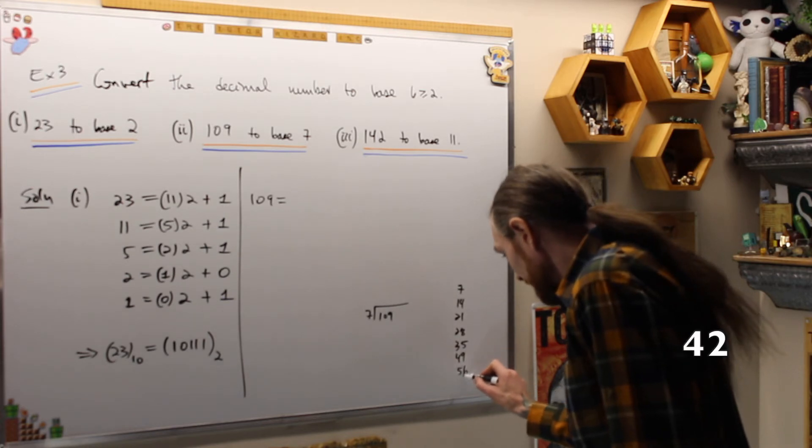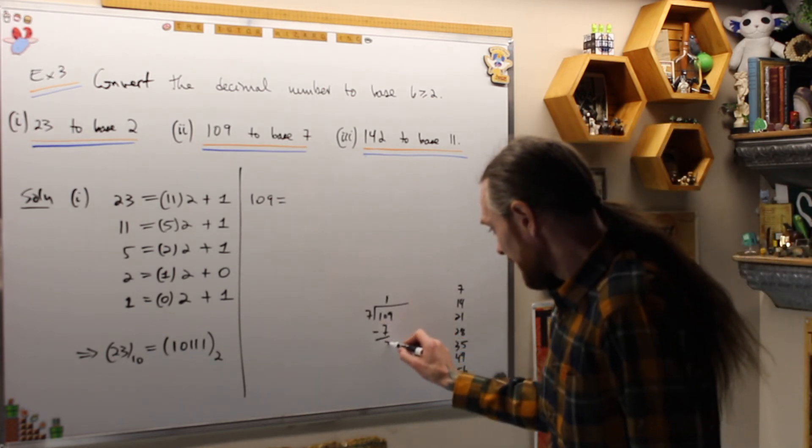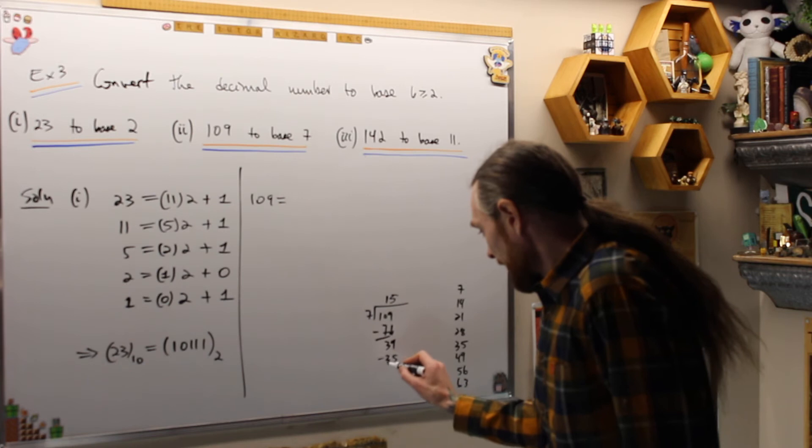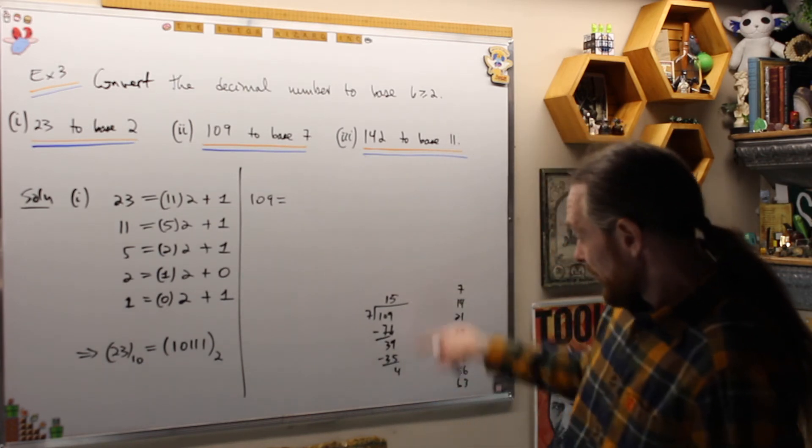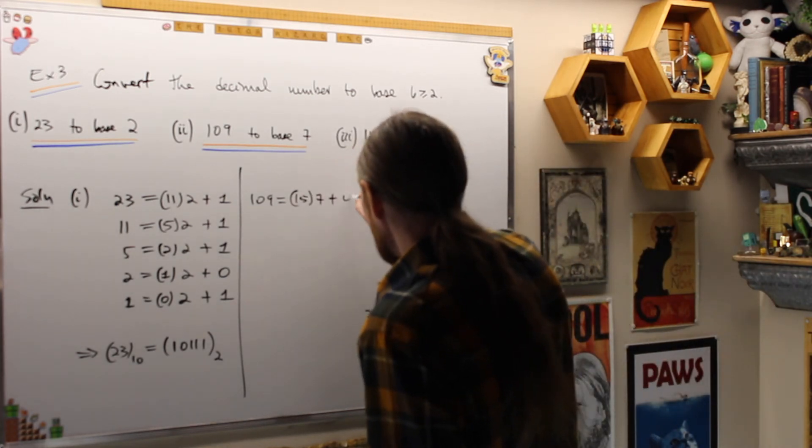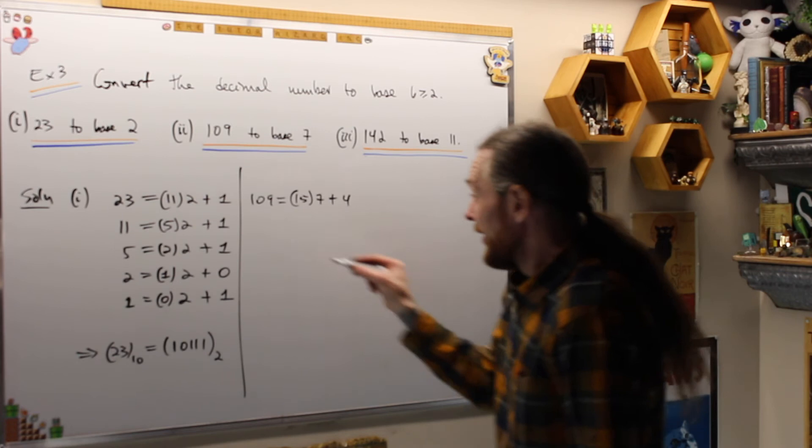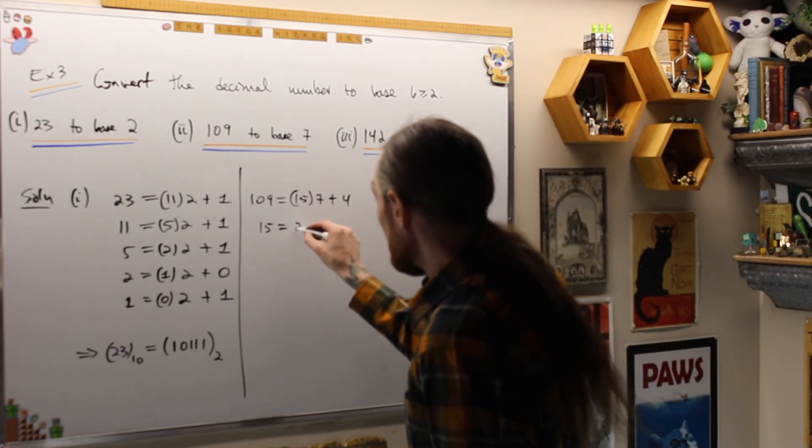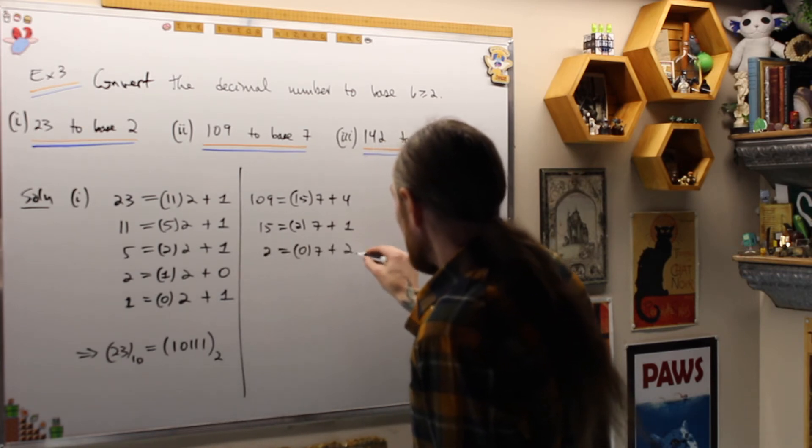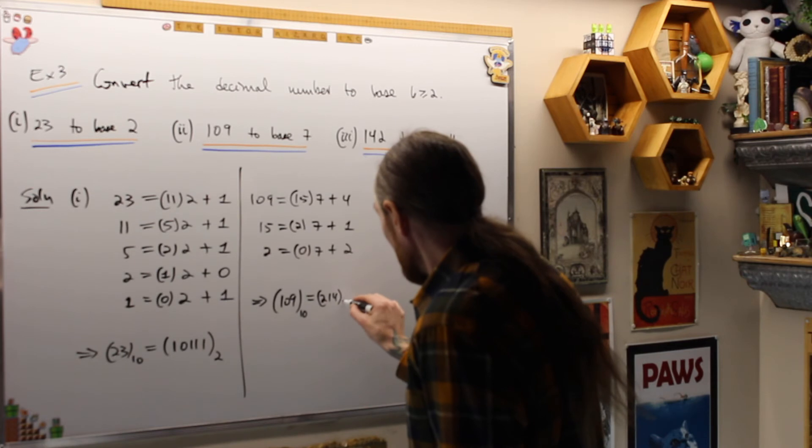So now what I'm saying is how many times does 7 go into 10 without going over? 1. I get 7. I subtract. I'm going to get 39. I'm going to bring this down. It should be a 5. I'm going to get 35. I subtract. I get a 4. So what this says is the quotient and remainder, when I use long division, is going to be 109 is 15 groups of 7 plus 4. Then once I've done that, once the numbers are reasonably small, I can probably get that in there. So this says 15 now is going to be equal to 2 times 7 plus 1, and 2 is equal to no groups of 7 plus 2. So what that says is 109 base 10 is equal to 214 base 7.